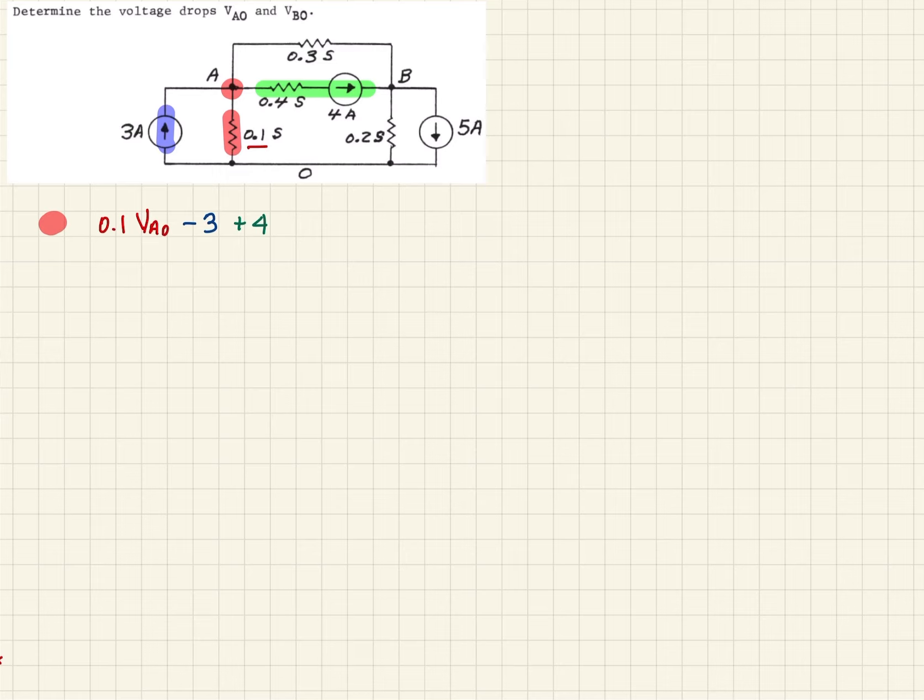And then finally, we've got this resistance here that's connecting the two nodes of interest, A and B. So we need to take the difference in the voltage between those two nodes times that impedance. So when we do that, what we'll have then is plus 0.3 times VA0 minus VB0.